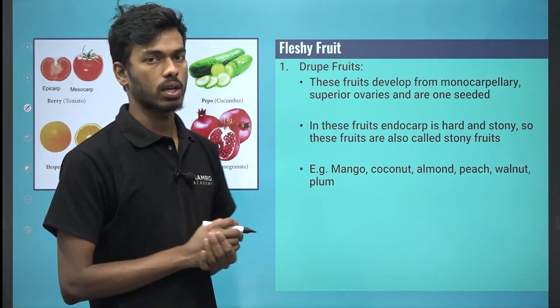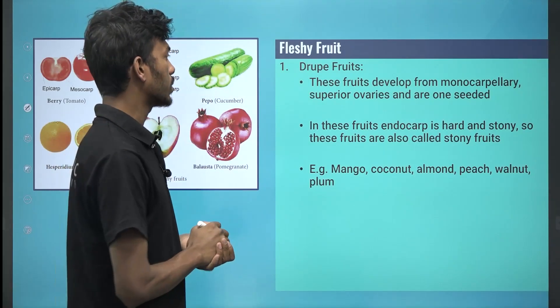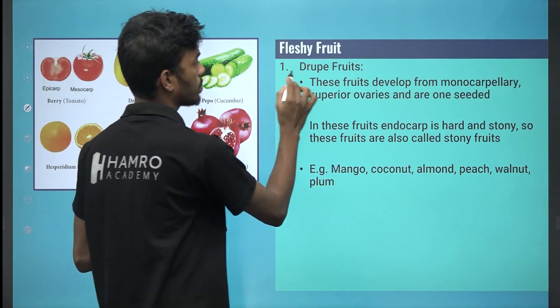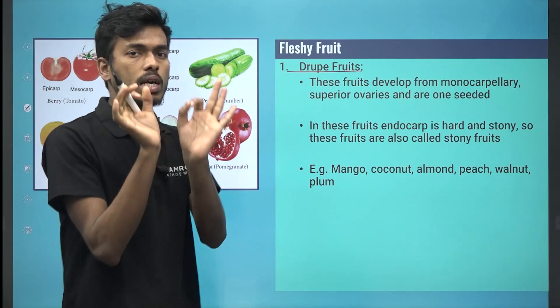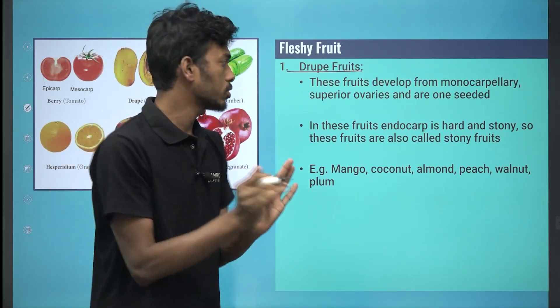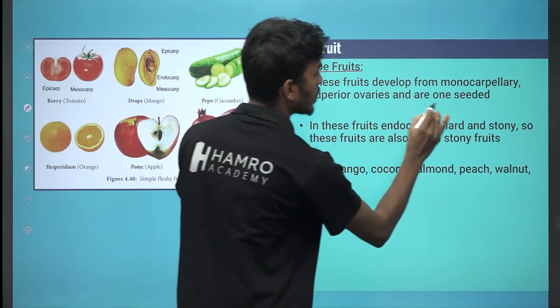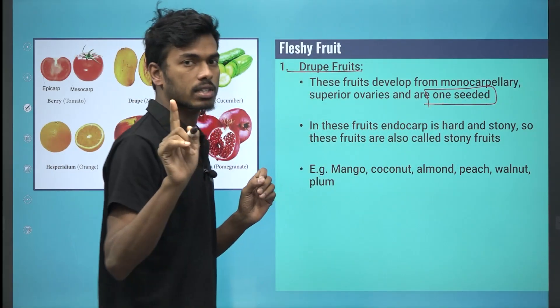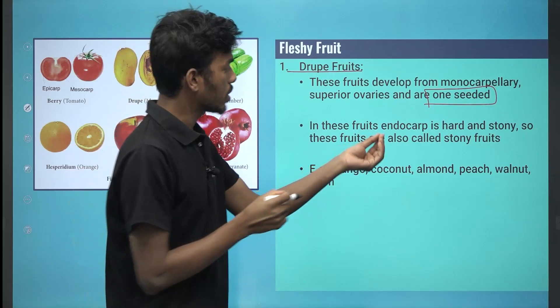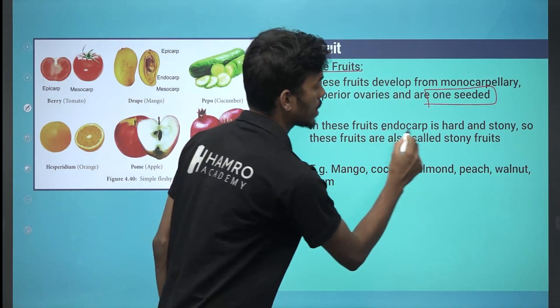Fleshy fruit is a good category. Fleshy fruit's first example is drupe fruit. Drupe fruit is a simple example. This is a single-seeded fruit.